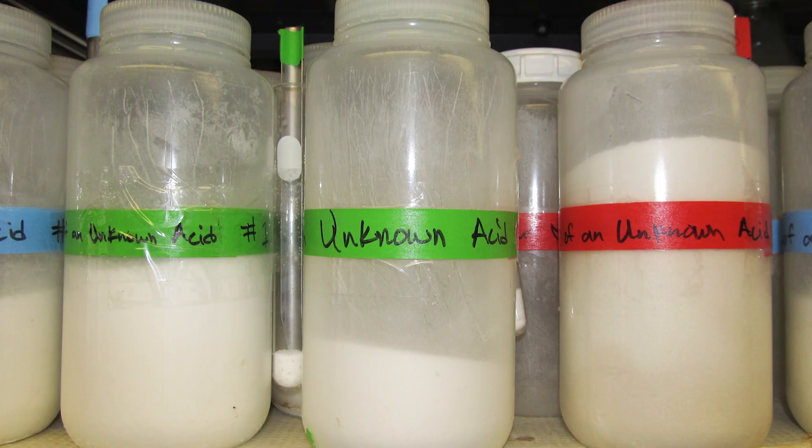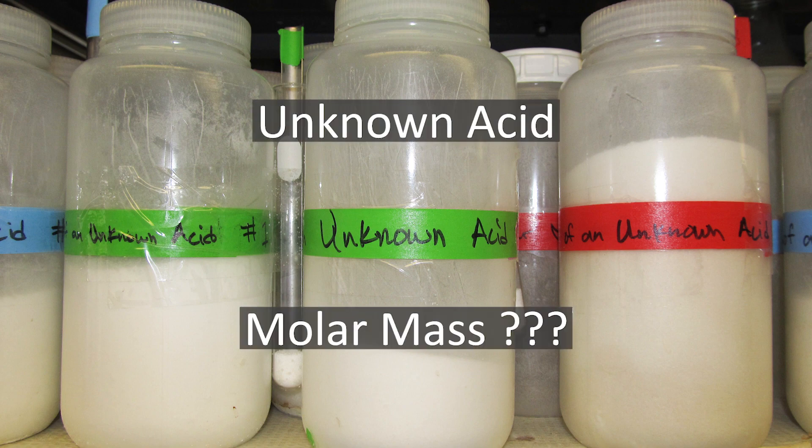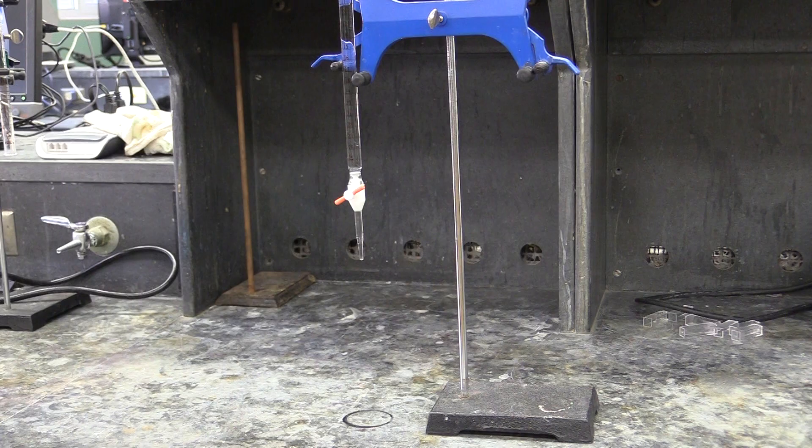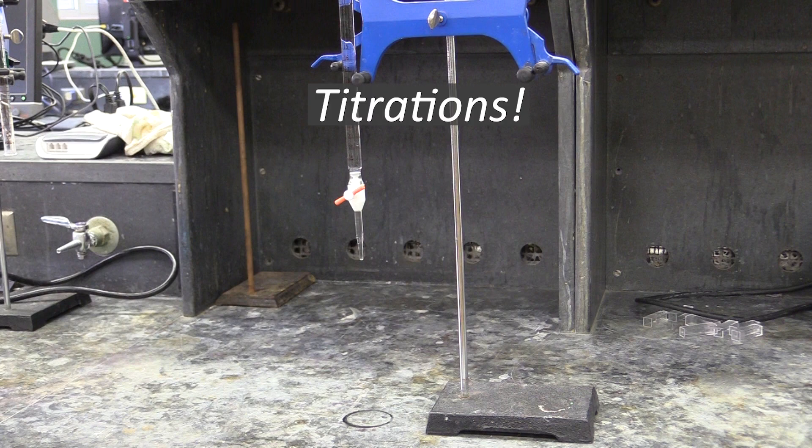Greetings 105 students! This is Ryan, here to tell you what you'll be doing in the molar mass of an unknown acid experiment. As you may have guessed from its title, the goal of this experiment is to determine the molar mass of an unknown acid. The technique you'll use to do this is the titration, more specifically an acid-base titration.